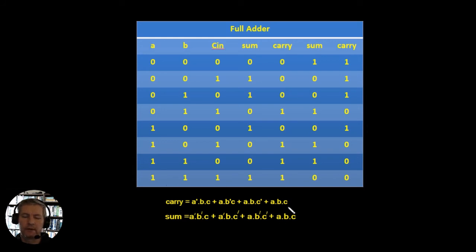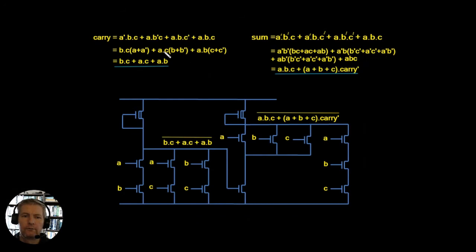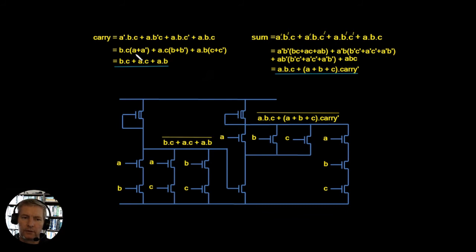I've rewritten the two equations — carry and sum — and we can simplify the carry. We can take out common factors: B·C can be factored with (A' + A), which equals 1, leaving just B·C. Doing the same for A·C and A·B, we're left with three terms: Carry = A·B + A·C + B·C.